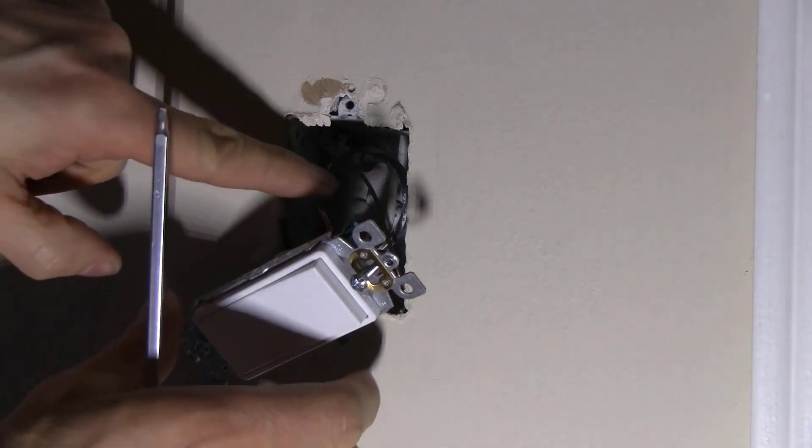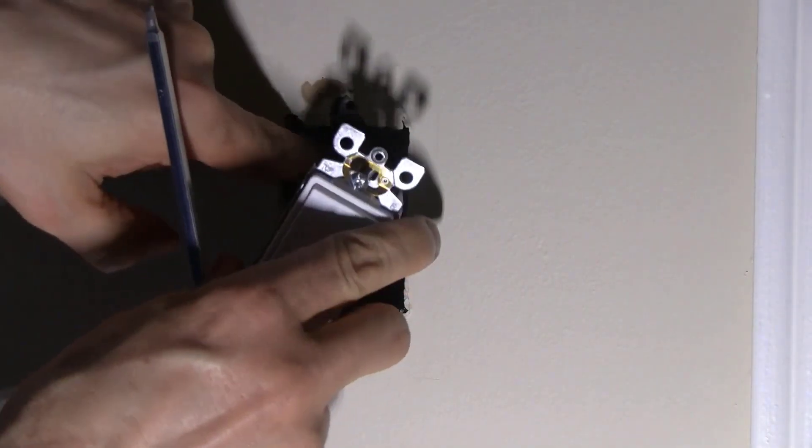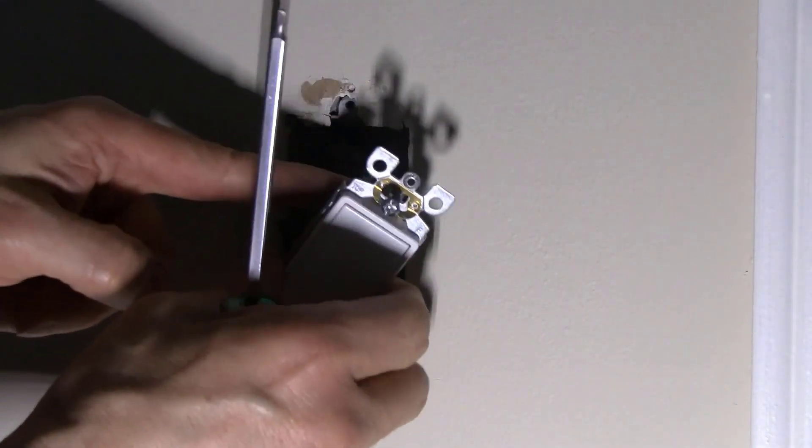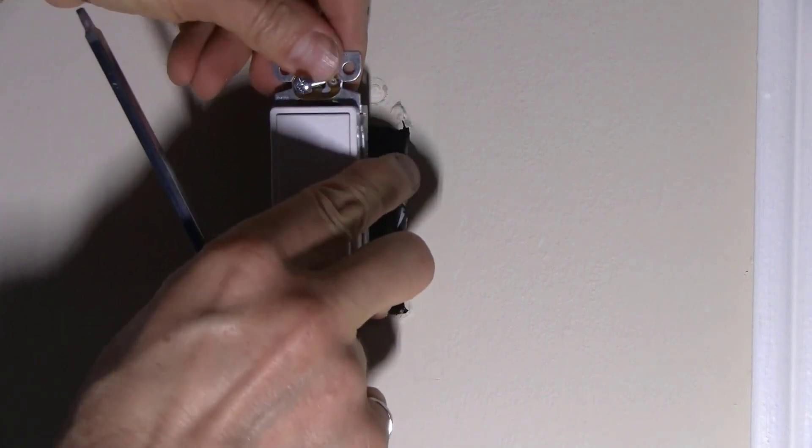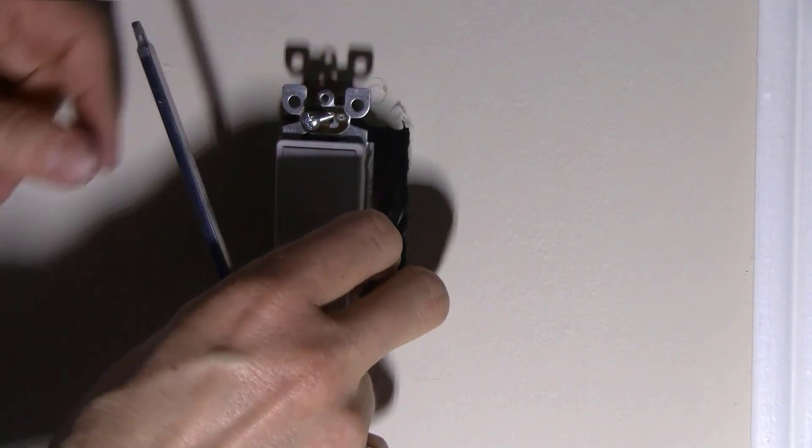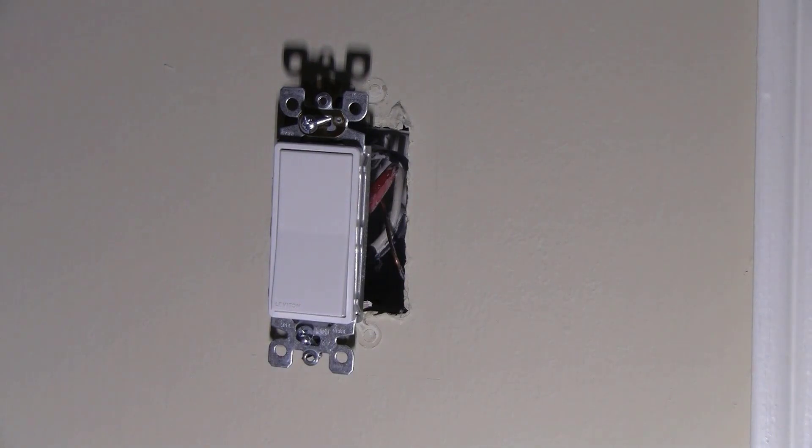Now I've got my ground wire connected to the back of the box or the other grounds. I've got it connected to my switch. Now I can go ahead and put my switch in knowing that I've added the ground that wasn't there because I'm changing from an old switch.